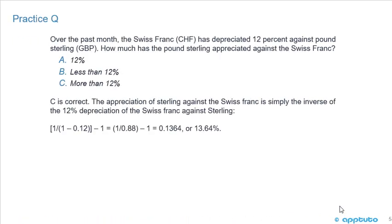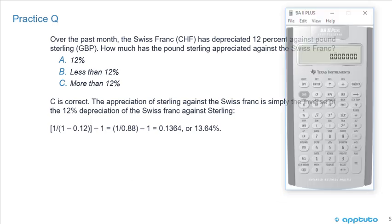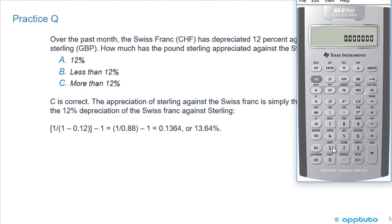That question is phrased a little bit differently, and that's why it's important to do as many practice problems as possible. So C is correct. The depreciation of the sterling against the Swiss franc is simply the inverse of the 12% depreciation of the Swiss franc against the sterling. So it's 1 divided by 1 minus 0.12 minus 1 equals 1 divided by 0.88 minus 1 equals 0.1364. So 1 divided by 0.88 minus 1 times 100 to get the nice round number, and you can see it's 13.63. So C is correct, it's more than 12%.